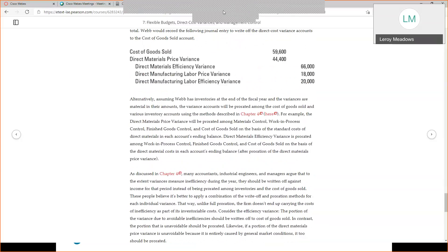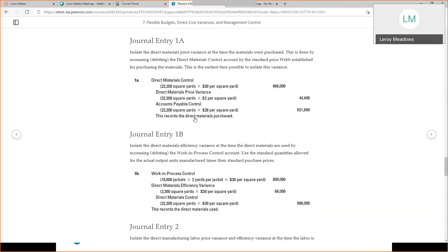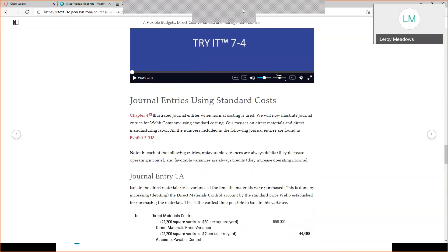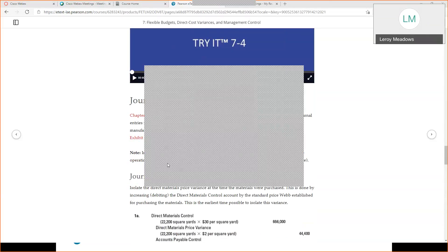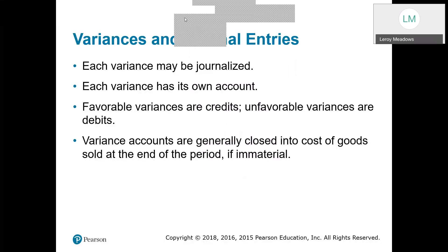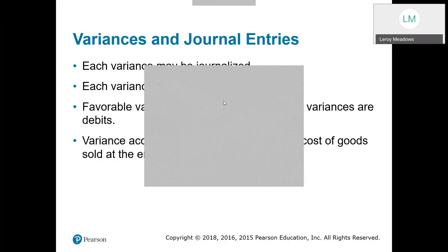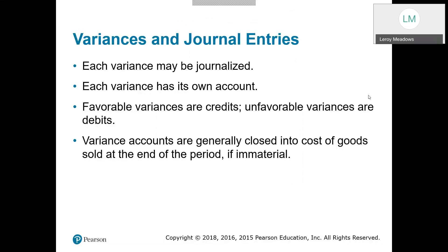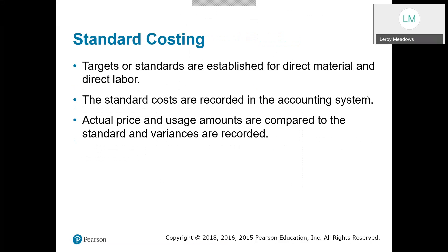That is what I wanted to show you from the book, since the PowerPoint didn't have the journal entries. Now, back to our PowerPoint. Standard costing: these are targets or standards established for direct materials and direct labor. The standard costs are recorded in the accounting system, and the actual price and usage amounts are compared to the standard and variances are recorded.